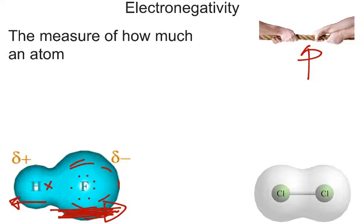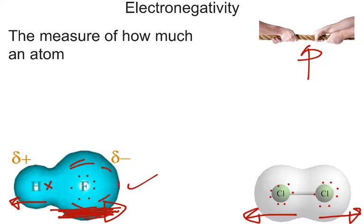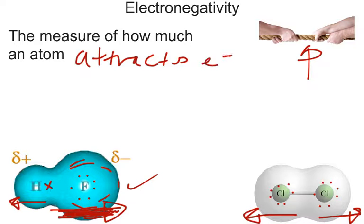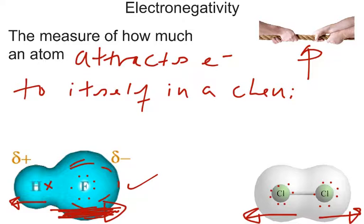That's a quick analogy of electronegativity at work. On the other side, we have chlorine — both F and Cl have seven valence electrons, they're halogens. Chlorine has a pull of approximately 3.2. Now the electronegativities will be different, but they're pulling in opposite directions, so you notice that the cloud is nice and evenly distributed with Cl2. But with HF, there's not an even distribution of the cloud. That's going to be a factor we'll talk about later in another video, but that's electronegativity at work — the measure of how much an atom attracts electrons to itself in a chemical bond, normally a covalent bond.